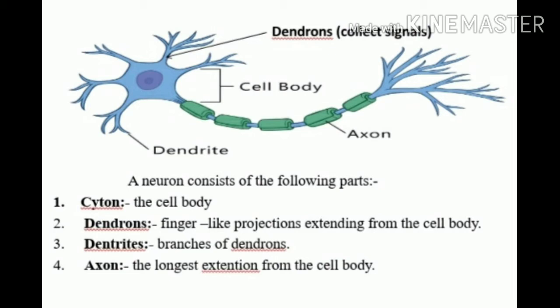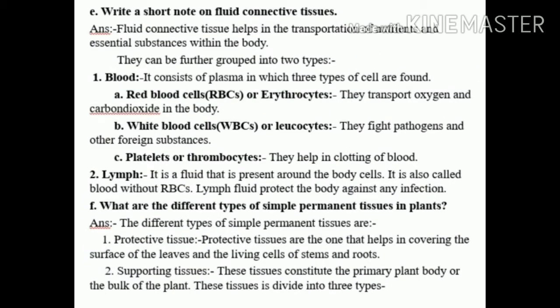Number 8e: Write a note on fluid connective tissue. Answer: Fluid connective tissues help in the transportation of nutrients and essential substances within the body. They can be further grouped into two types. Number one: Blood — it consists of plasma in which three types of cells are formed. Number a: Red blood cells (RBCs) or erythrocytes — they transport oxygen and carbon dioxide in the body. Number b: White blood cells (WBCs) or leukocytes — they fight pathogens and other foreign substances.